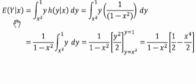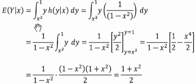We're going to start with the definition of the conditional mean of y given x. We need to integrate over the support of y, which is x squared to 1, the function y times the conditional distribution of y given x.